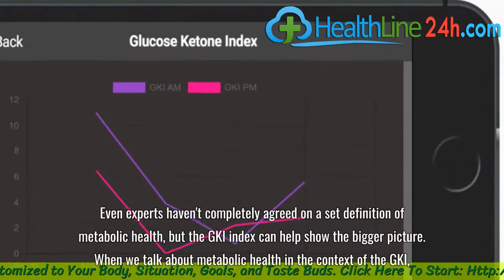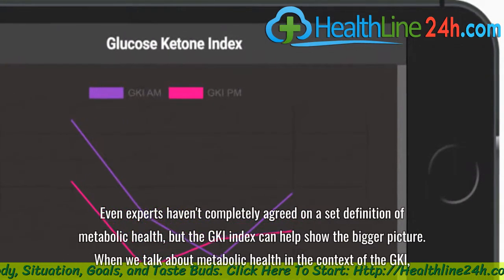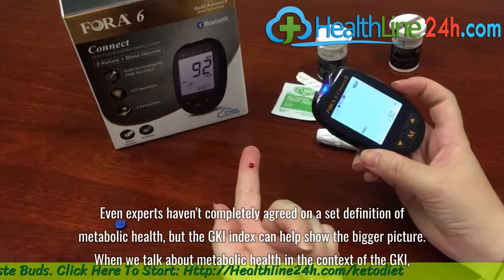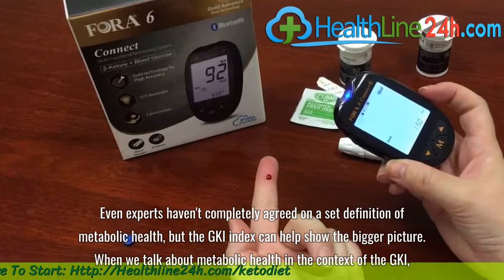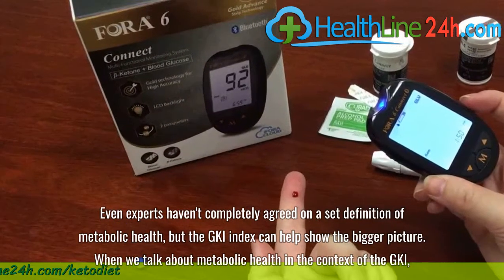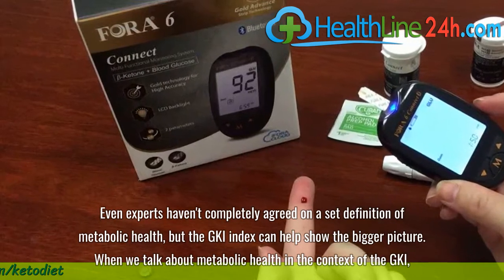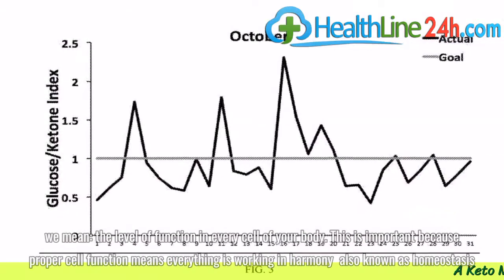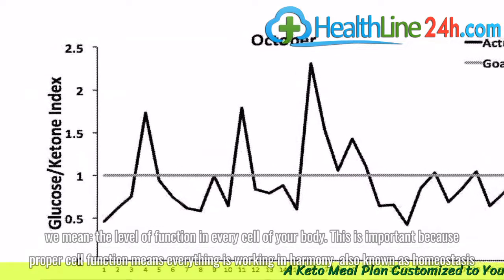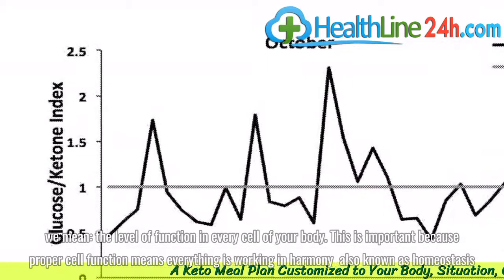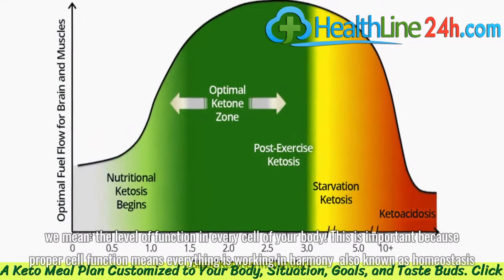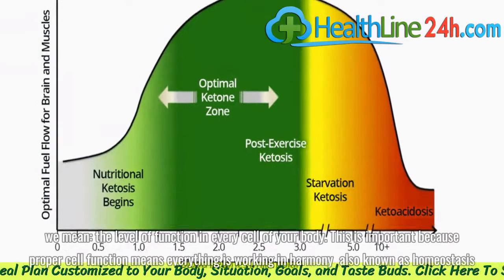Even experts haven't completely agreed on a set definition of metabolic health, but the GKI index can help show the bigger picture. When we talk about metabolic health in the context of the GKI, we mean the level of function in every cell of your body. This is important because proper cell function means everything is working in harmony, also known as homeostasis.